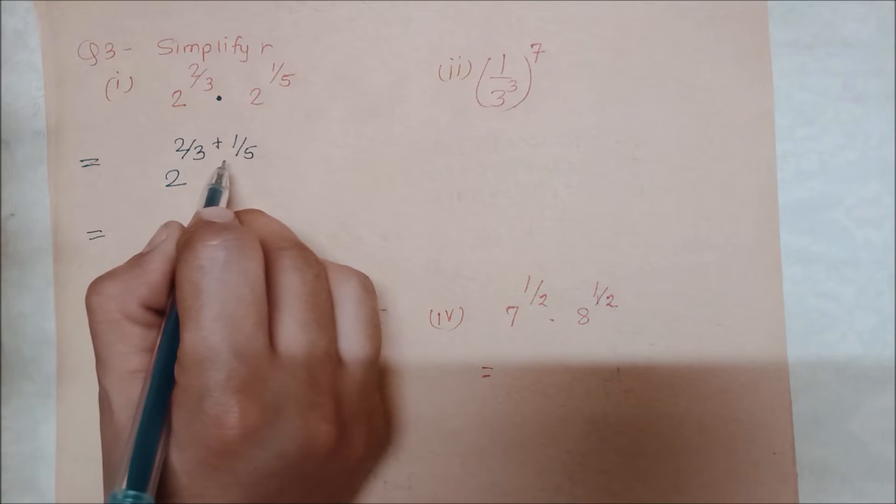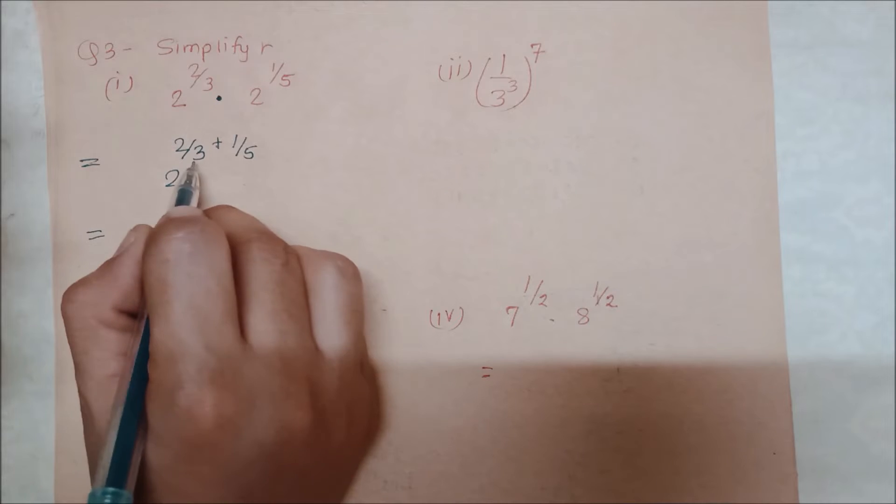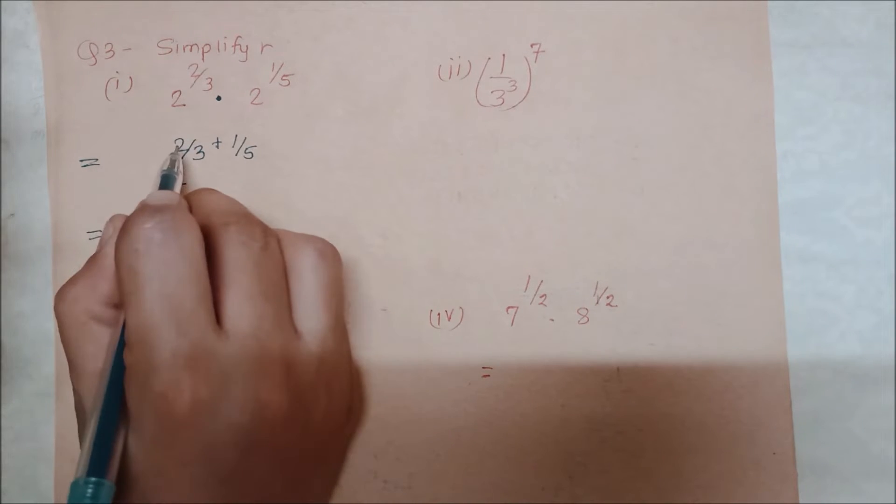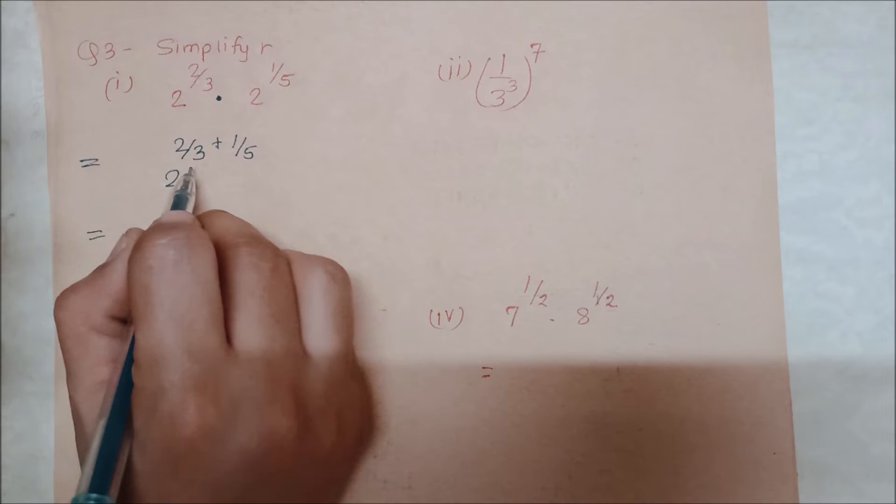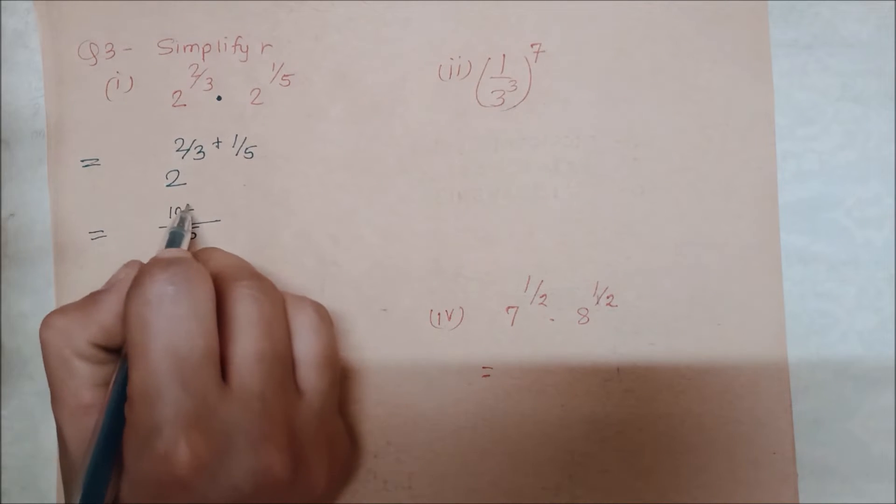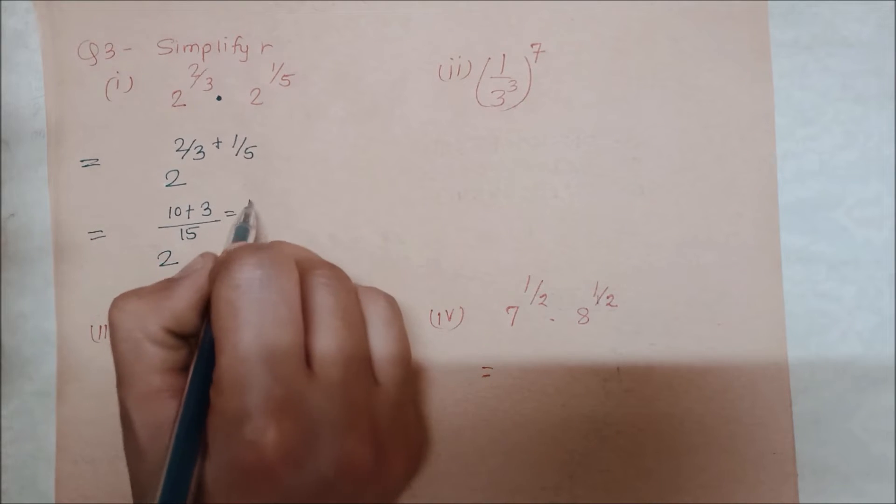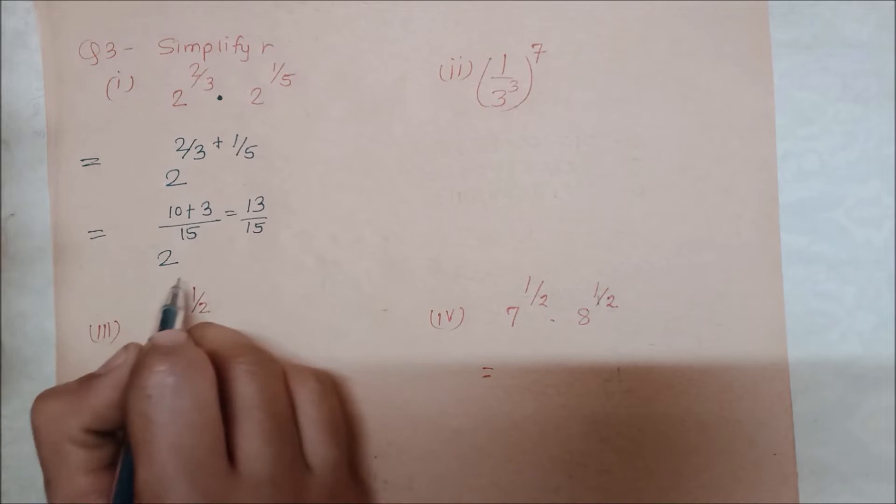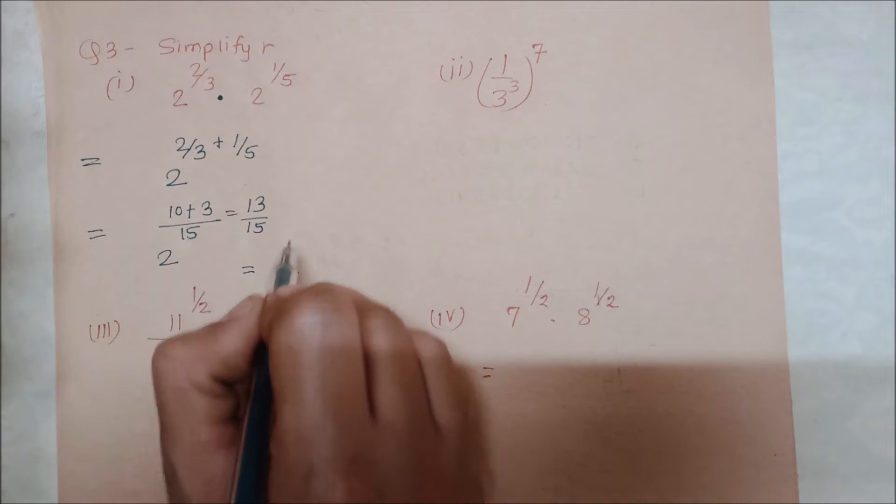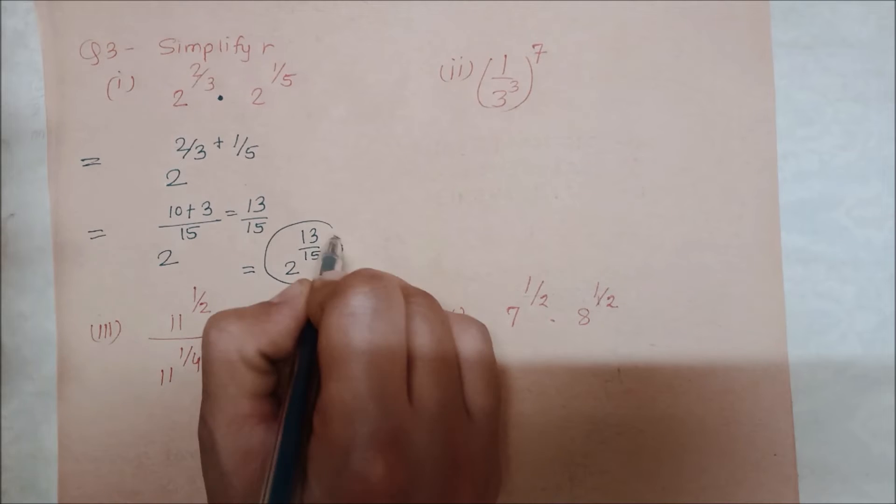So what will happen here? In addition we do the LCM. 5 times 3 is 15, and we will cross multiply: 5 times 2 is 10 and 3 becomes 3, so 10 plus 3 is 13 upon 15. So our overall answer will be 2 to the power 13 upon 15. This is our answer.